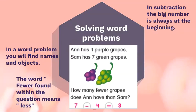How many fewer grapes? In subtraction you put the big number at the beginning. Seven take away four equals three, so three fewer grapes than Sam. Great job everyone! Let's take a look at the other example.